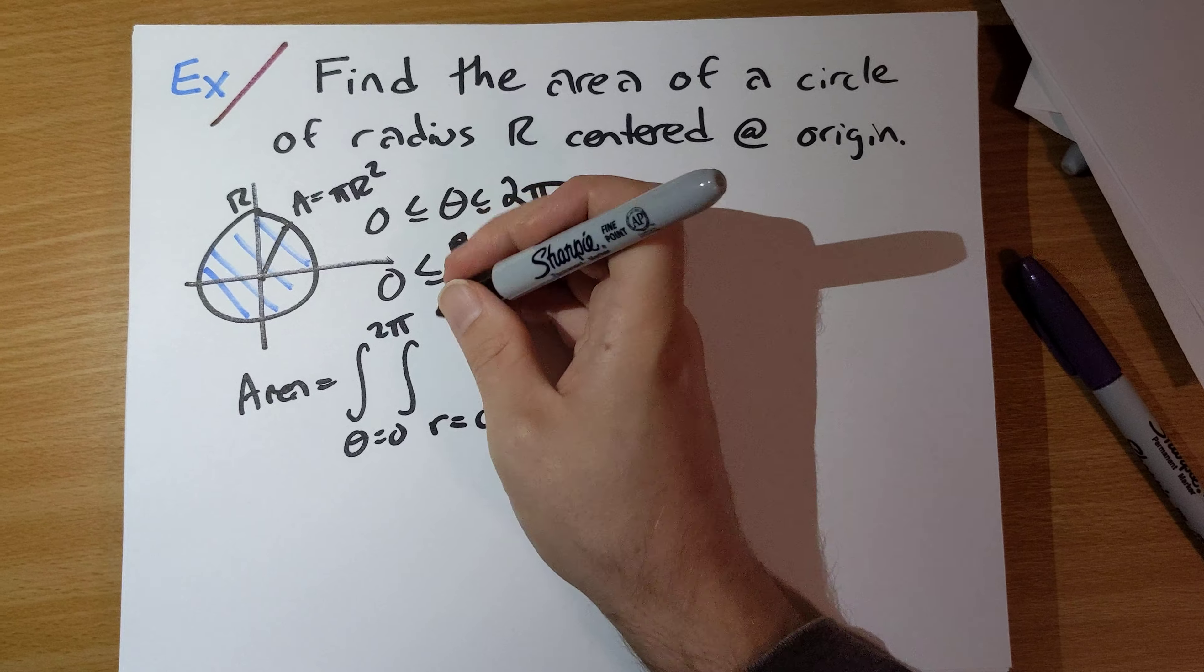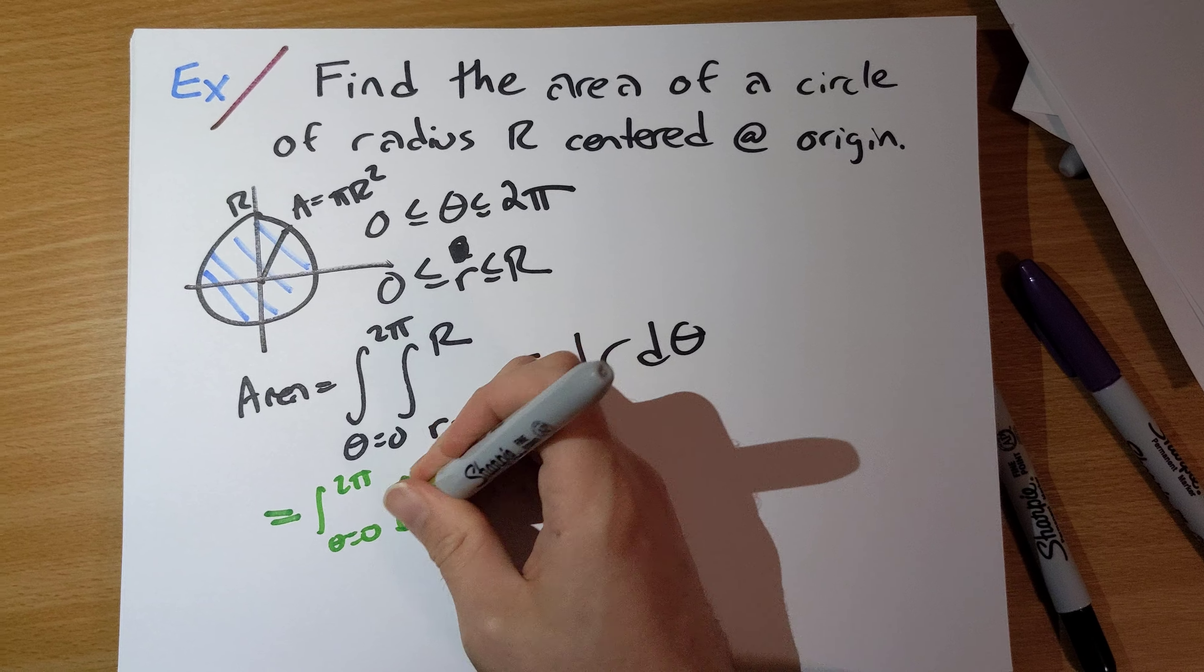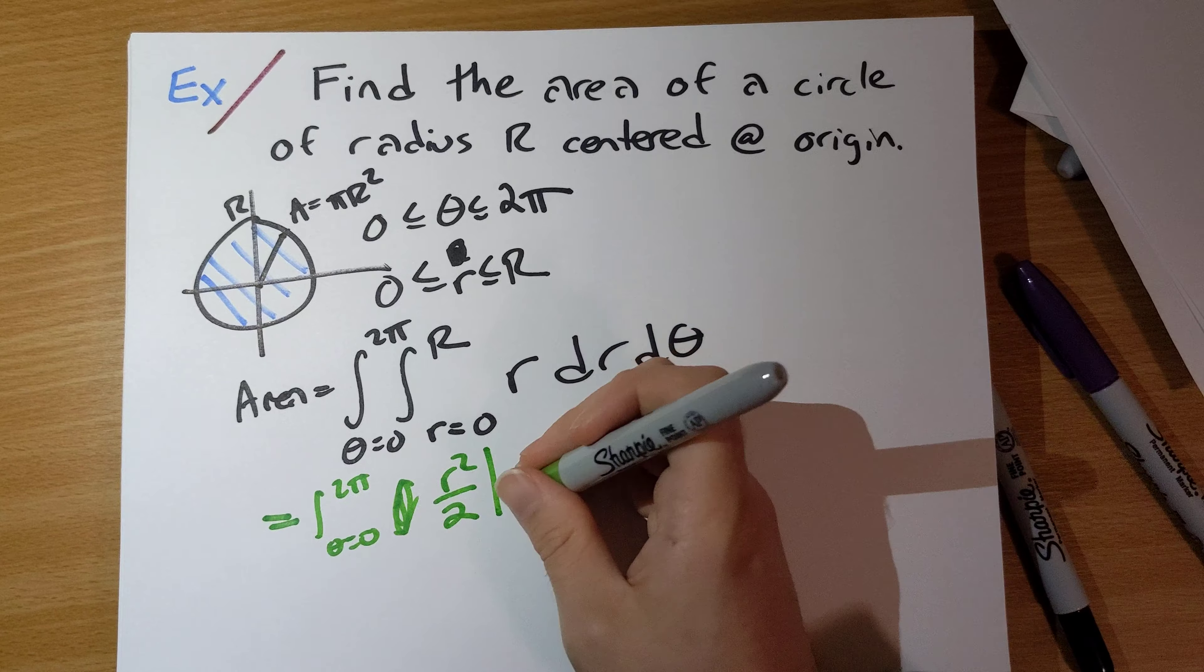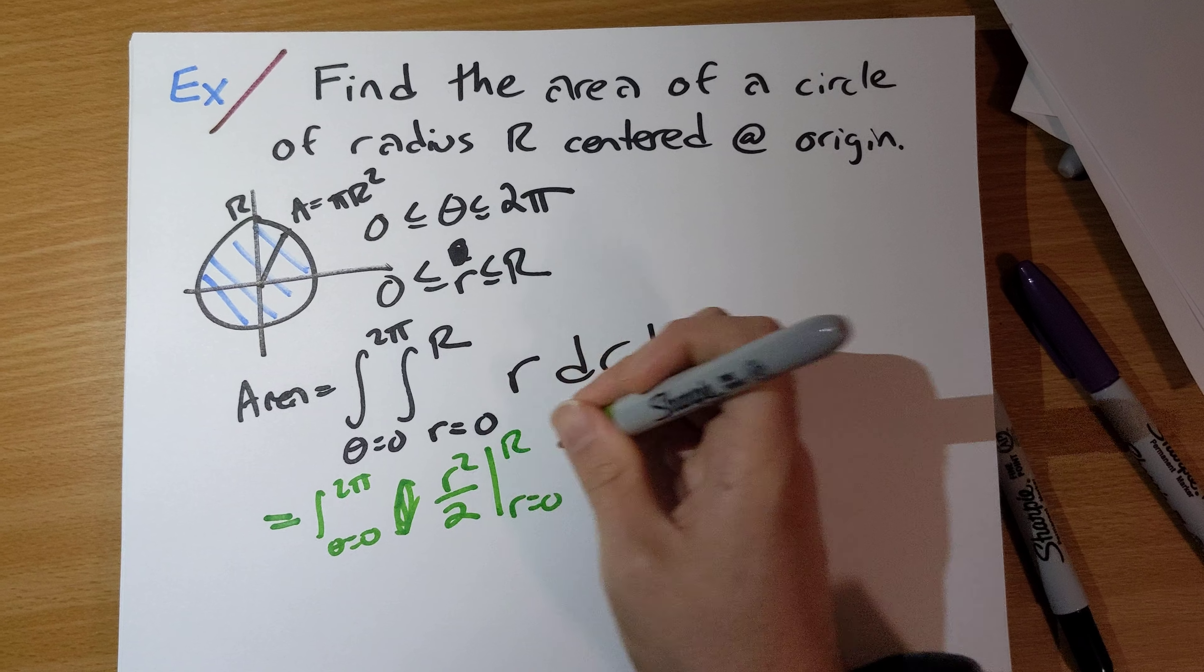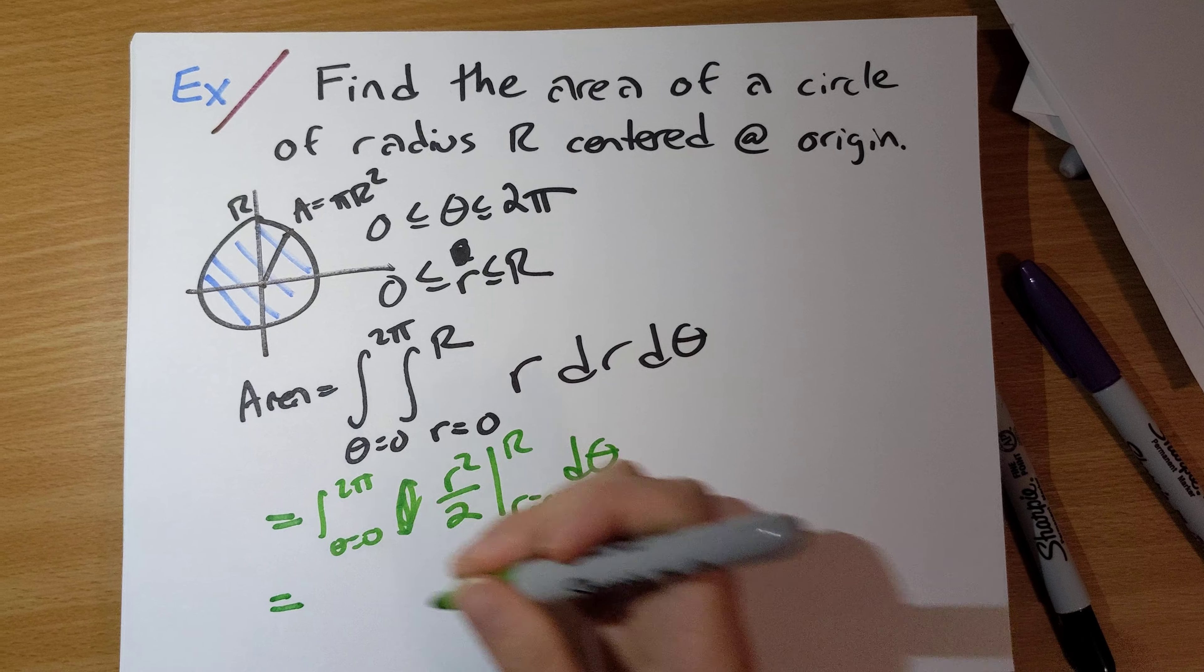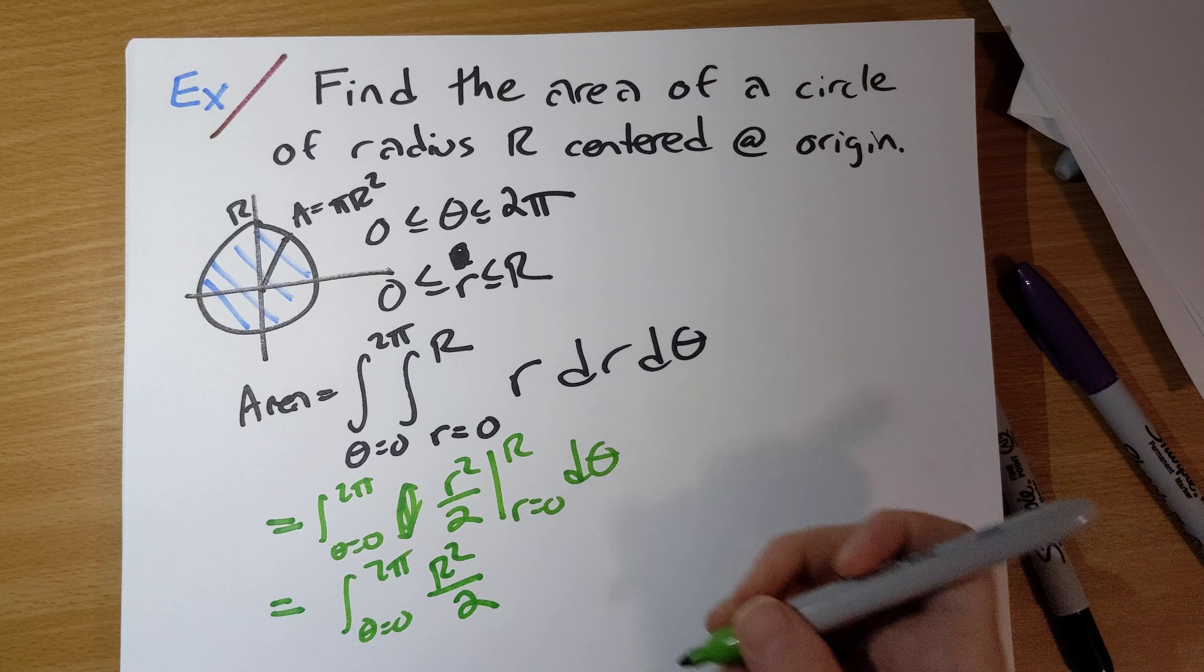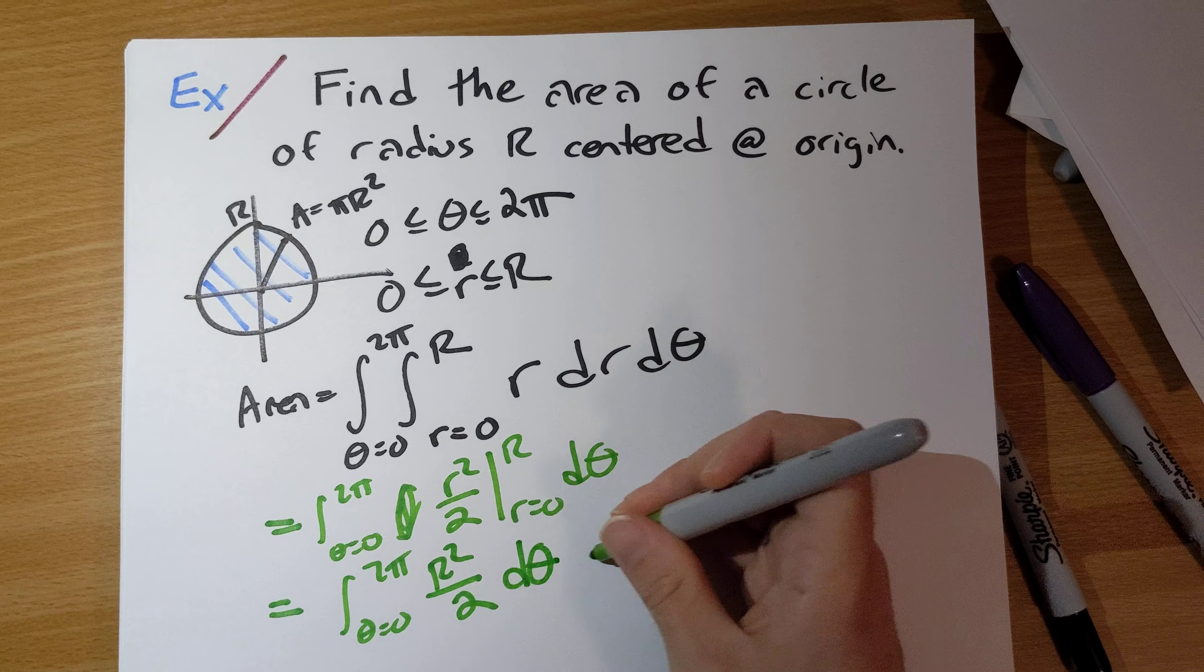What do we get? We do the integration here. θ runs 0 to 2π. r goes to r squared over 2, and we find its antiderivative evaluated from 0 to big R. And this will give us big R squared over 2 minus 0, dθ.